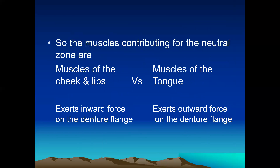The muscles involved in recording the Neutral Zone are basically two groups: the muscles of the cheeks and lips, and the muscles of the tongue. The muscles of the cheeks and lips exert forces in an inward direction — that is, towards the denture flange from the outside — while the muscles of the tongue exert outward force on the denture flange from inside.